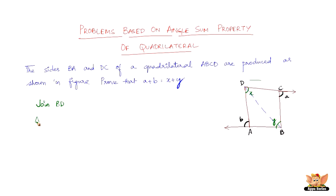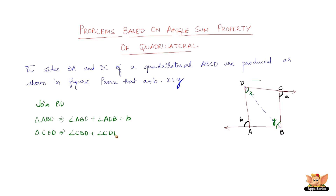In triangle ABD, angle ABD plus angle ADB equals B — the reason being that B is the exterior angle of this triangle, and an exterior angle equals the sum of the two opposite interior angles. Similarly, considering triangle CBD, angle CBD plus angle CDB equals A.